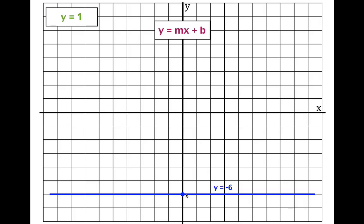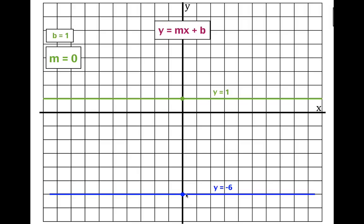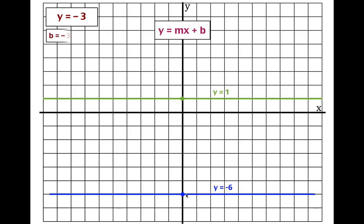This is y equals one. The y-intercept is one, and there's no slope — it's zero. Put a dot at plus one on the y-axis and draw a horizontal line. That is y equals one. And finally, y equals minus three: the y-intercept is minus three, the slope is zero. Put a dot at minus three and draw the horizontal line. That is y equals minus three.